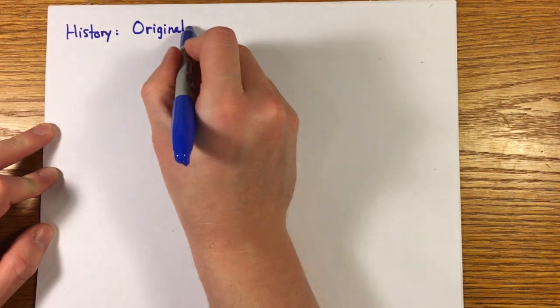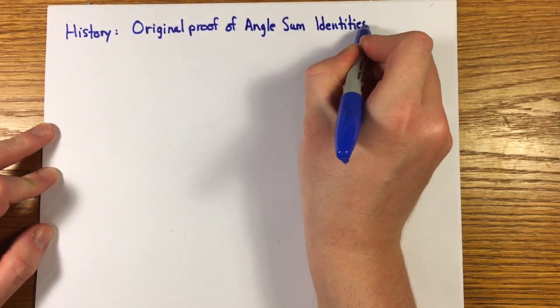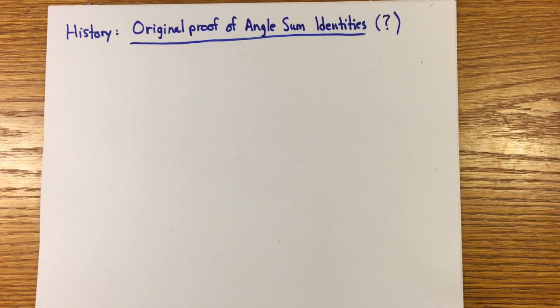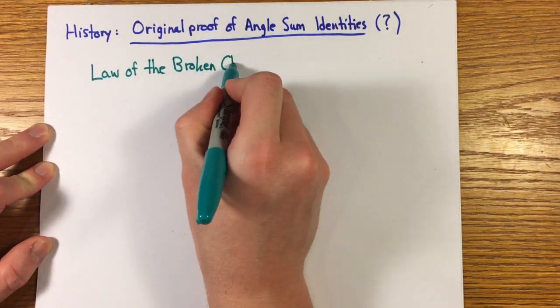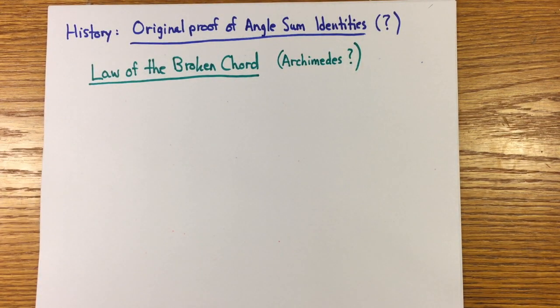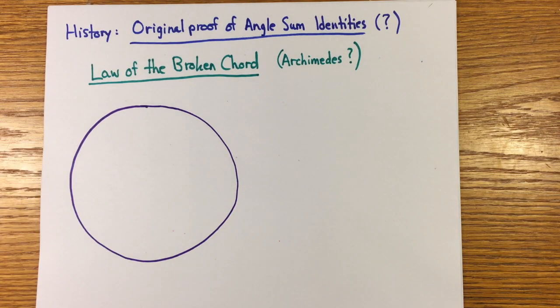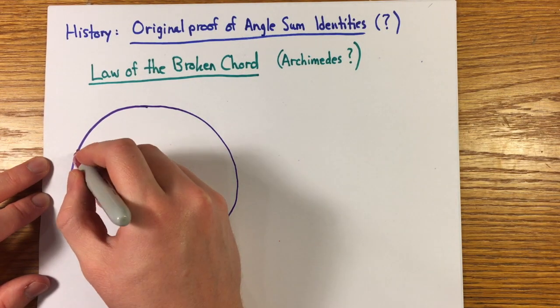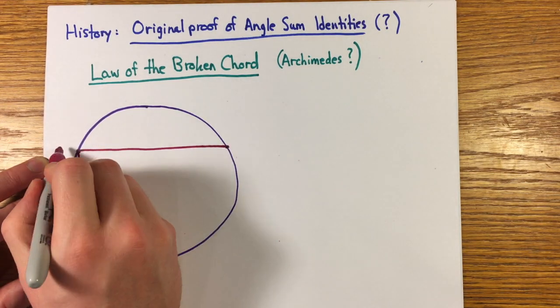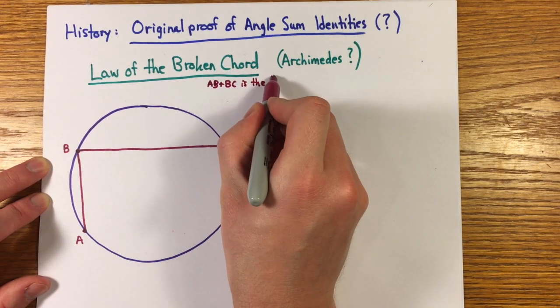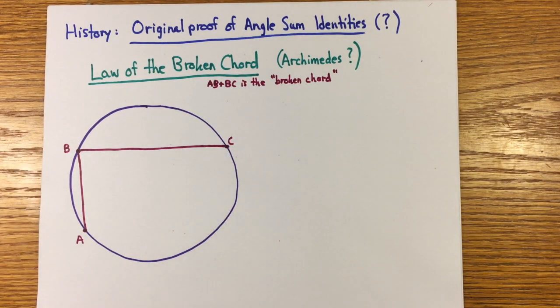Now, I thought it might be interesting to give what may be the original proof of these angle sum identities from a time when people did not use trig functions like we use them today. This theorem is called the law of the broken chord due to Archimedes, the hero of the first several episodes of this series, or at least it's attributed to him by the 11th century Persian mathematician Al-Biruni.